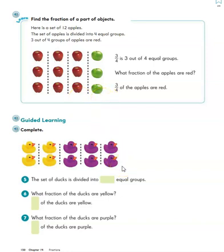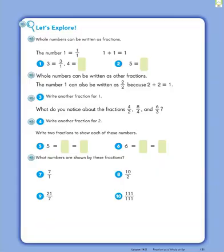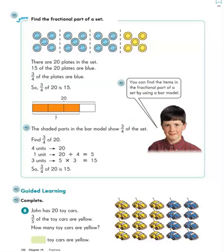We looked at some cute little rubber duckies. And we also looked at different ways that you can write whole numbers as fractions. Remember, we can put the same number as the numerator and denominator, like five over five would be the whole thing, or one. And then you can also put a one under any number, and that's the same as saying three divided by one is three. So today we're going to be doing some more with finding the fractional parts of a set.